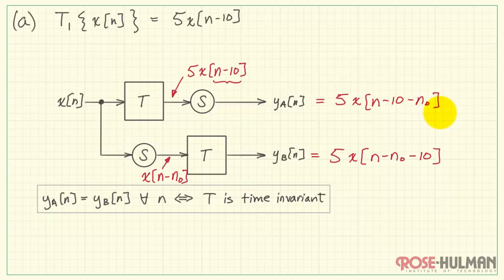Now we can compare the two to see if they are equal. And we see that we can interchange the order of these two terms. And sure enough, we do find that YA and YB are the same. That tells us that the system T1 is, in fact, time invariant.